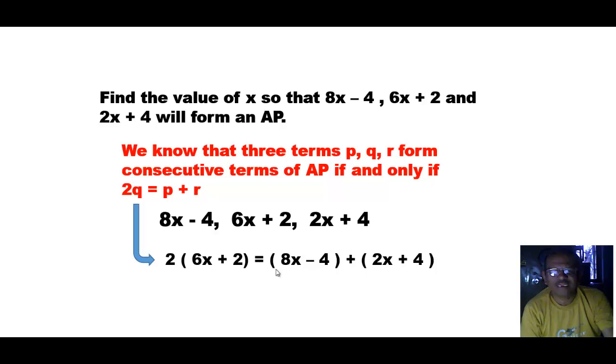Now we will solve this. To solve, we will multiply by 2 inside the bracket. So 2 times 6x is 12x, and 2 times 2 is 4. So you will get 12x plus 4.